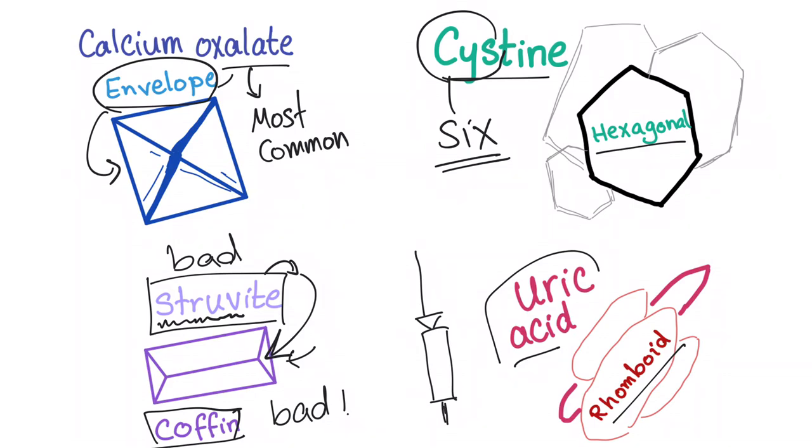And if you see them, they are negative birefringent and they are elongated. Here, this is the most elongated shape in this stuff. So, uric acid, rhomboid.